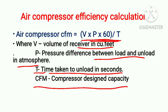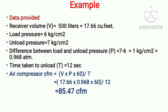Now we will calculate using an example. The receiver volume is taken as 500 liters — generally receiver volumes are provided in liters, so we convert to cubic feet. 500 liters converts to 17.66 cubic feet. The load pressure is 6 kg and the unload pressure is 7 kg.